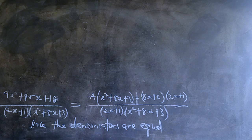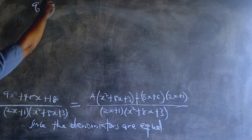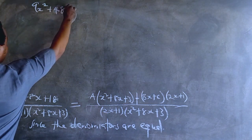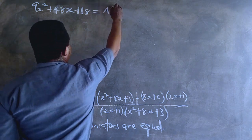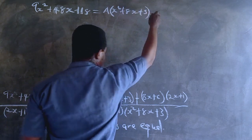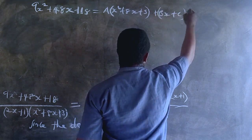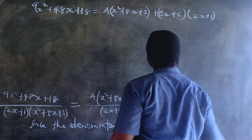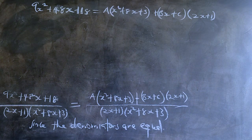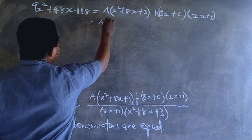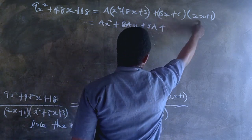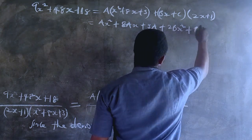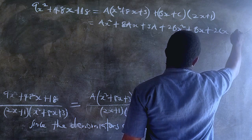So we have this numerator to focus on: 9x squared plus 48x plus 18 equals a times x squared plus 8x plus 3, plus bx plus c in brackets multiplied by 2x plus 1 in brackets. Let us go on and open those brackets. If we open those brackets, we have ax squared plus 8ax plus 3a, plus 2bx squared plus bx plus 2cx plus c.